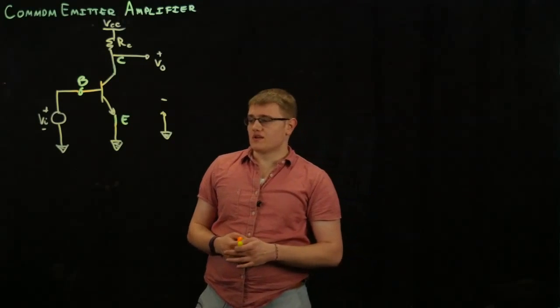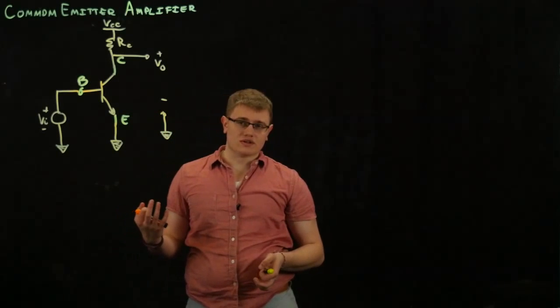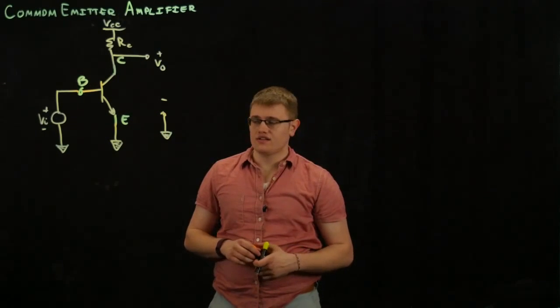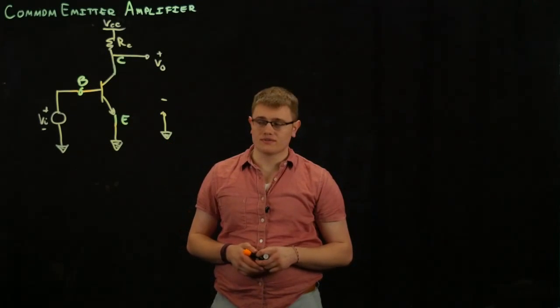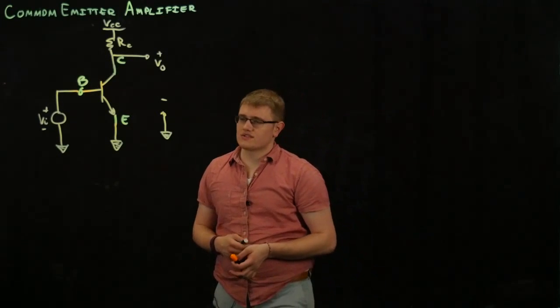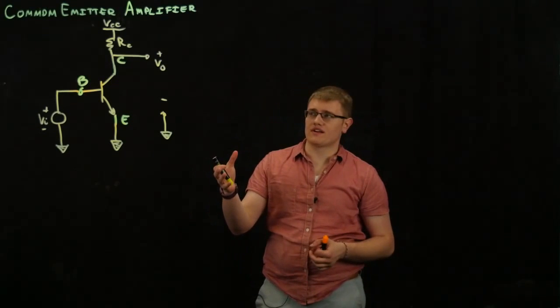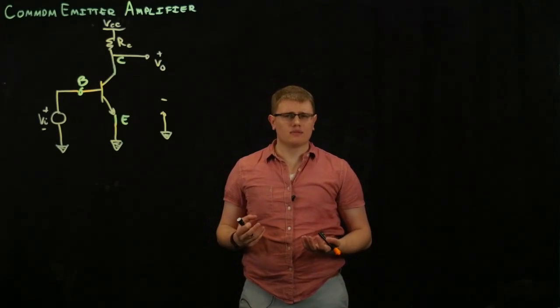And so, if there was a source here of 2 volts or something like that, it would still be a common emitter amplifier. It would just have a source there. And so, this is our common emitter amplifier. Let's do a problem with it.